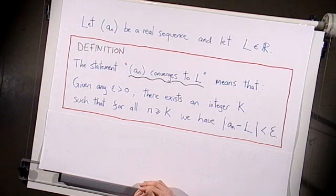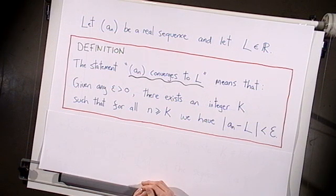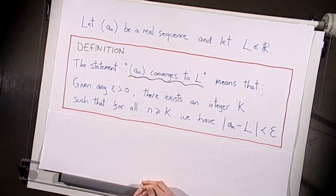So let a_n be a real sequence and let l be a real number. Here's the definition of convergence. The statement 'the sequence a_n converges to l' means that, given any positive number epsilon, there exists an integer k such that for all numbers n greater than or equal to k, we have that the distance between a_n and l is less than epsilon. That looks a bit unpleasant at first sight, but with a little bit of practice we'll soon get used to working with it — so let's look through that definition one more time.